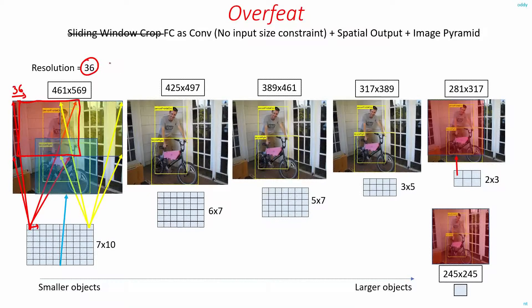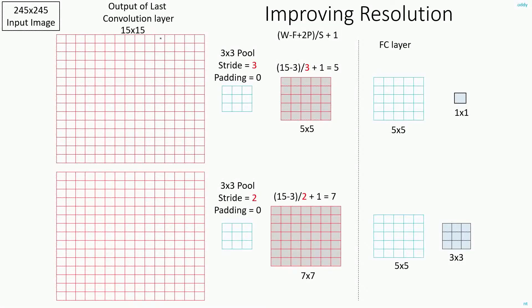In case you want to improve the resolution, there is one technique as is done in the OverFeat paper. For a 245x245 input image, the output of the last convolution layer will be 15x15 feature map. After the convolution layer, they use a 3x3 pool with a stride of 3 and padding of 0. With this pooling, you will get a 5x5 feature map output. You can apply this formula to get the 5x5 feature map output. Then we just convolve with the 5x5 filter in the fully connected layer to get the 1x1 output, and so on and so forth.